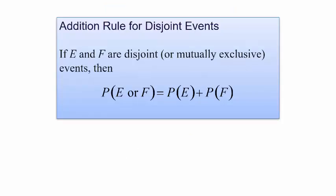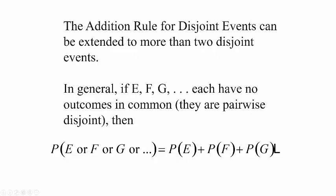This is important: if events E and F are disjoint or mutually exclusive, then the probability that E or F happens is just P(E) + P(F). This works only if they are disjoint — they cannot occur at the same time. The addition rule for disjoint events can be extended to more than two events. If E, F, G, and so on each have no outcomes in common — pairwise disjoint — then P(E or F or G) = P(E) + P(F) + P(G), and so on.